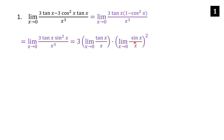If you multiply it all together — 3 · tan x · sin²x on top, and x · x² = x³ on the bottom — you recover the original expression. Now these are basic limits: the limit as x→0 of tan x / x is 1, and the limit as x→0 of sin x / x is also 1, and 1² = 1.